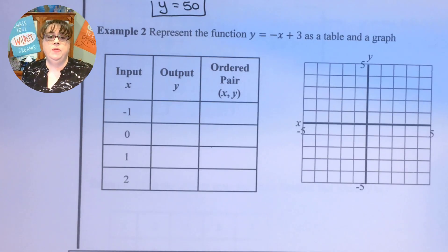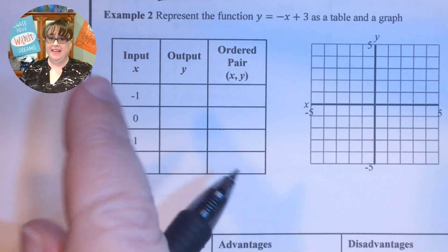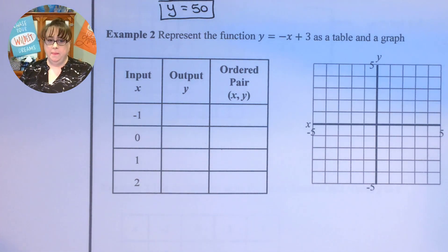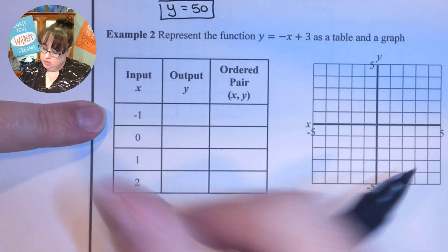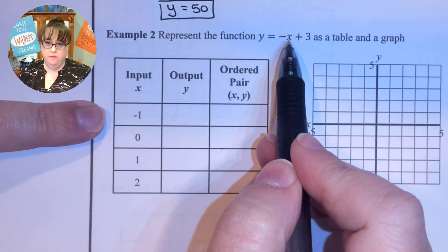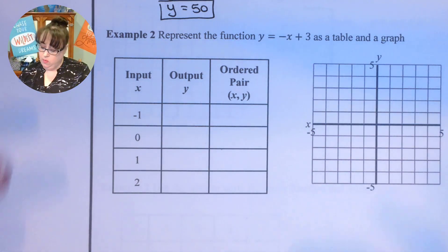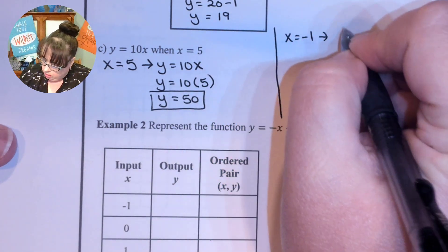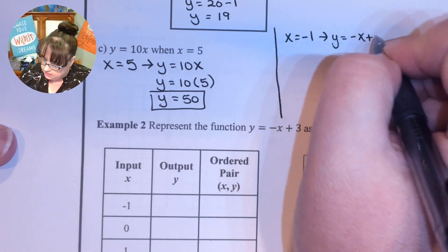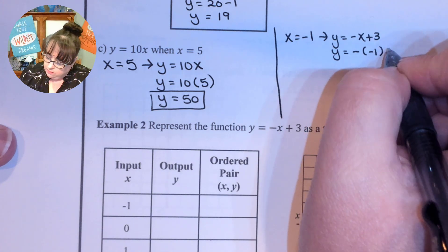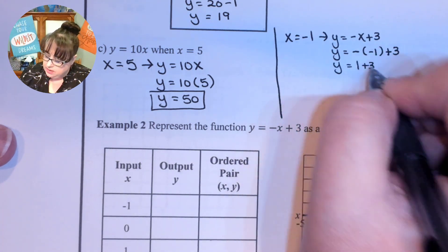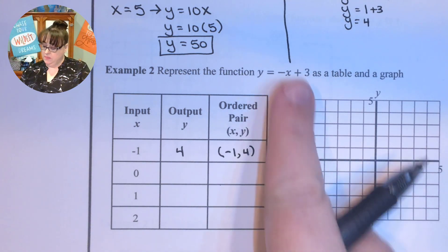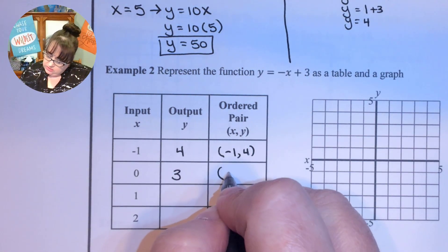Now let's look at functions represented in a table. Basically what you're going to do in a table is do this work and then organize it nicely. I'm going to substitute values in and find the answer. When x is equal to negative 1, put it into y equals negative x plus 3: y equals the opposite of negative 1 plus 3, so y equals 1 plus 3, y equals 4. That is the ordered pair negative 1, 4. For x equals 0 the answer is 3, giving ordered pair 0, 3.